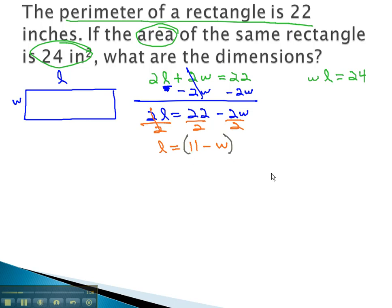We can then take this expression and replace the L in the area equation with 11 minus W to give us W times 11 minus W equals 24.